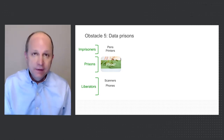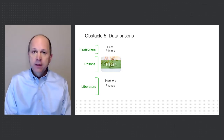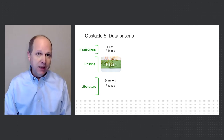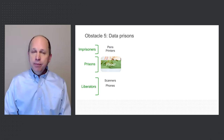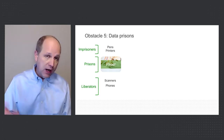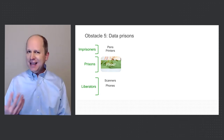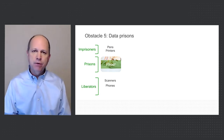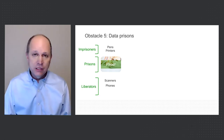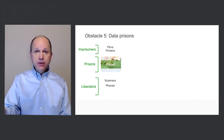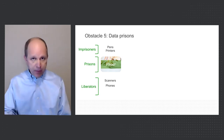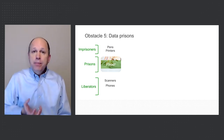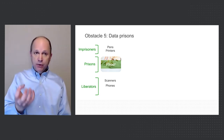Let's talk about the data prisons. The first one is paper. Paper is an imprisoner of data — or rather, the pen and the printer is the imprisoner; the paper is the prison. The liberator is a scanner or maybe a phone with optical capture. The liberator uses data parsing to not just read the characters, but to interpret the strings of information that exist on the page. QuickBooks Online uses this for their receipt capture — knowing the vendor name, the date, and the amount. That's called data parsing.